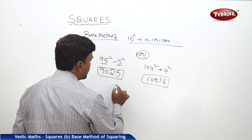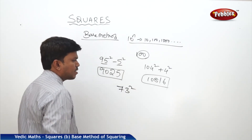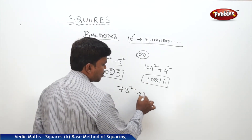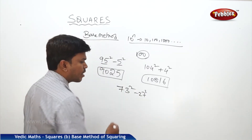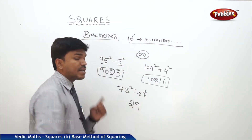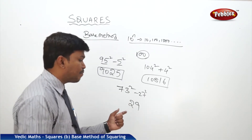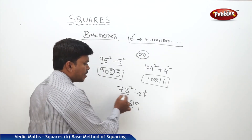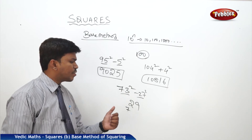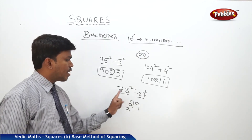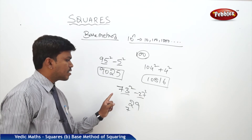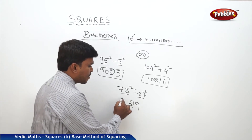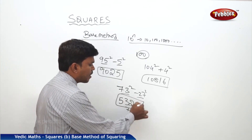One more example. I need 73 square. Compare 73 with the base 100 — it is less by 27. What is 27 square? 729. Since the right side part should consist of only 2 digits, write 29 and 7 becomes the carry. Now 73 minus 27 is 46. Add the carry 7: 46 plus 7 is 53. So the answer is 5329.